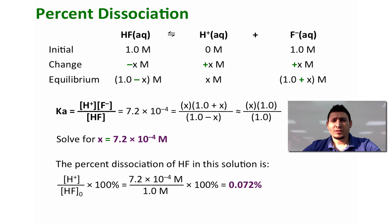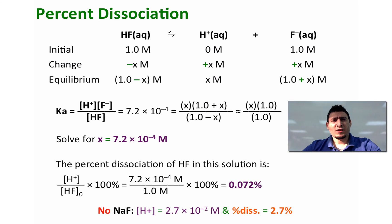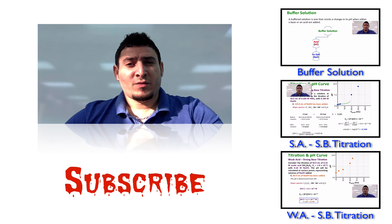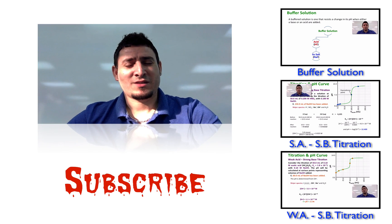Remember, the percent dissociation of HF without adding any sodium fluoride was equal to 2.7 percent. So the percent dissociation of HF has decreased because of the common ion effect, which shifts the equilibrium toward making more HF rather than dissociating it. I hope this video was helpful — please like, share, and subscribe, and I'll see you next time.